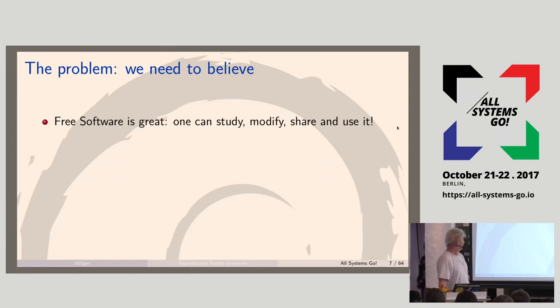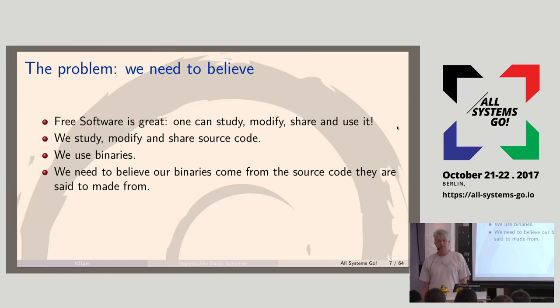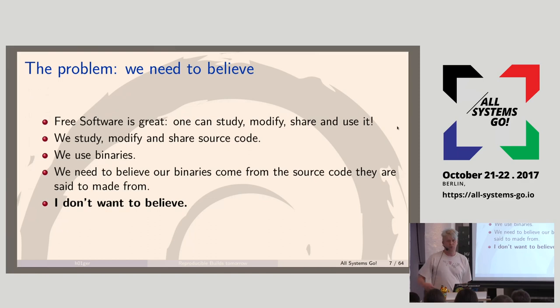About the motivation for why to do this: free software is great — we can modify it, share it, use it, pass it on. But that's all about source code and we use binaries. We need to believe that the binaries are coming from the source, because there's no way to really be sure. You cannot prove it. And I don't want to believe that — I want to be sure.